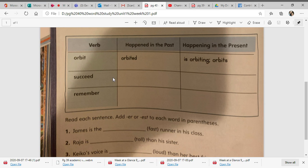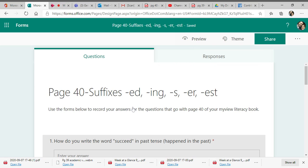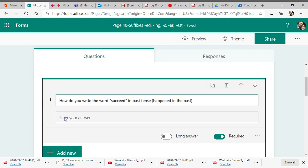So you're going to fill in succeed and remember using your Google Forms. So when you go to your assignment, you'll pull up your Google Forms and it looks like this. How do you write the word succeed in past tense? It happened in the past. So you would type in your answer here.